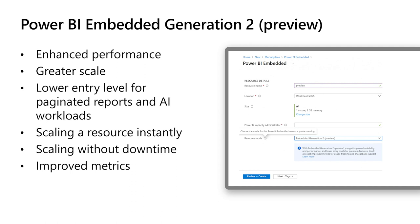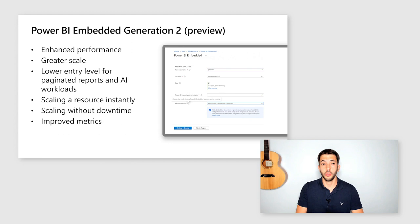Now let's talk about Power BI Embedded Gen 2. We've just released Power BI Embedded Generation 2, which is in public preview now. This is a capacity that gives you enhanced performance on any capacity size, greater scale with no limits on refresh concurrency and fewer memory restrictions, a lower entry level for paginated reports and AI workloads so you can start with A1 and grow as you need, and scaling is now instant and without downtime. You will also have improved metrics that will help you do automation on them.